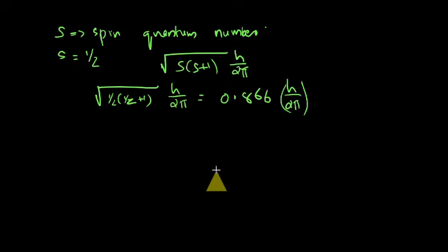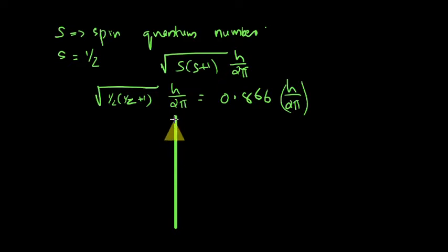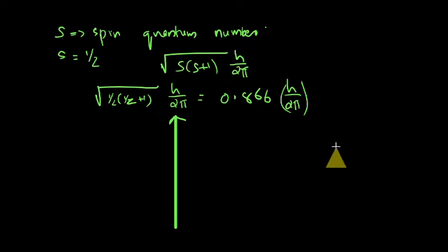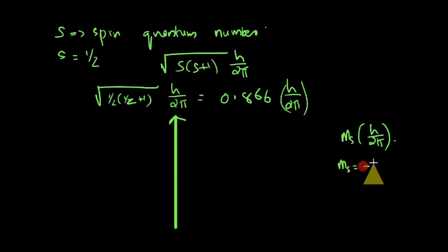This spin angular momentum is a vector quantity. Since it is a vector, there will be some restrictions on the orientation of the spin angular momentum vector. The restriction is such that the component of the spin angular momentum in a given reference direction — suppose this is the z-axis as the reference direction — that component should be ms times h divided by 2π, where ms ranges from minus s to plus s.